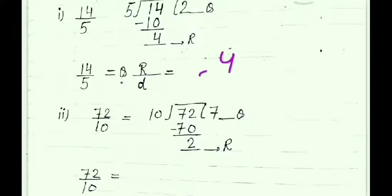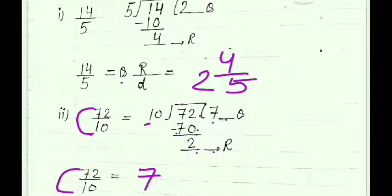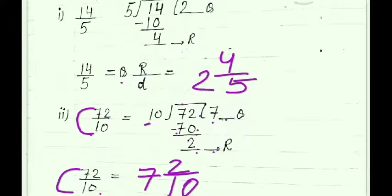So 14 upon 5 can be converted to mixed fraction 2 whole 4 upon 5. Next, 72 upon 10: divide 10 into 72 — it is divisible 7 times. 10 sevens are 70, remainder is 2. Quotient is 7, so write 7 as integral part, reminder 2 as numerator, divisor 10 as denominator. So 72 upon 10 equals 7 whole 2 upon 10.